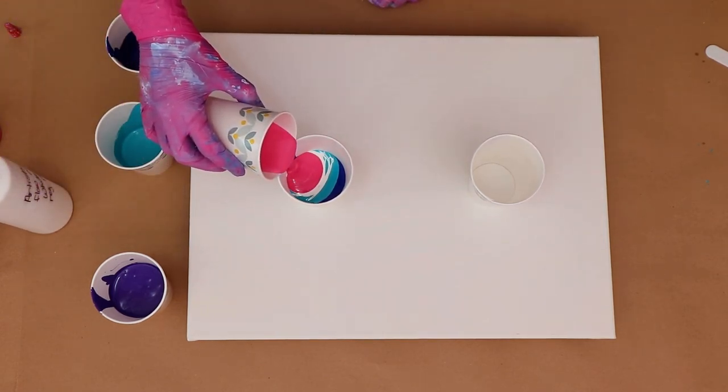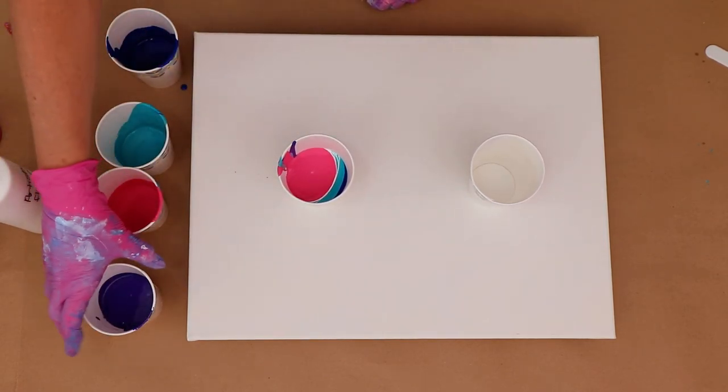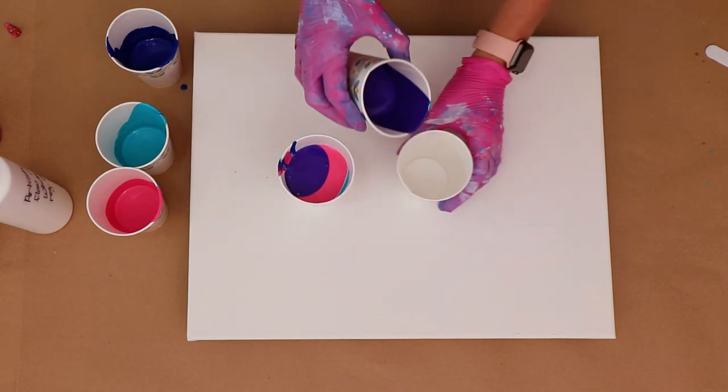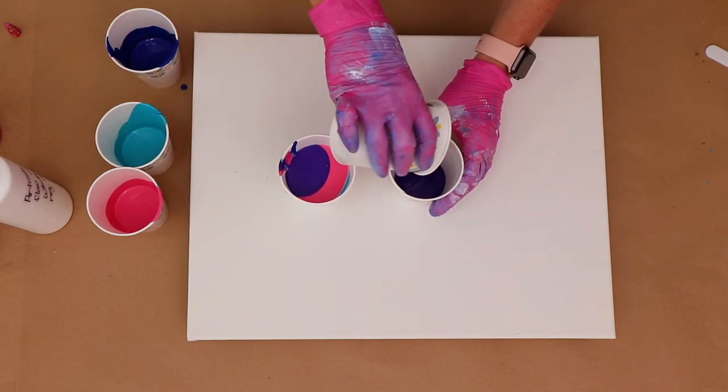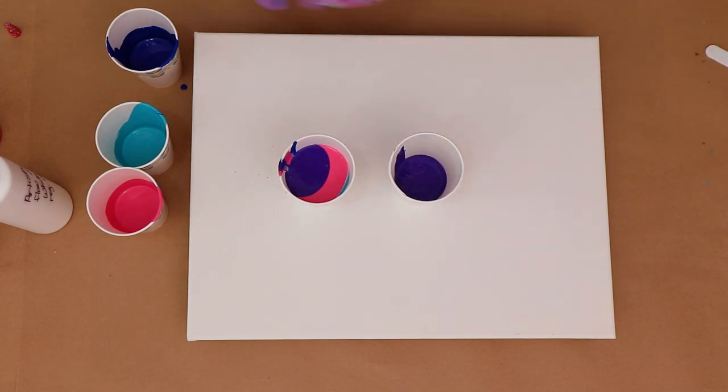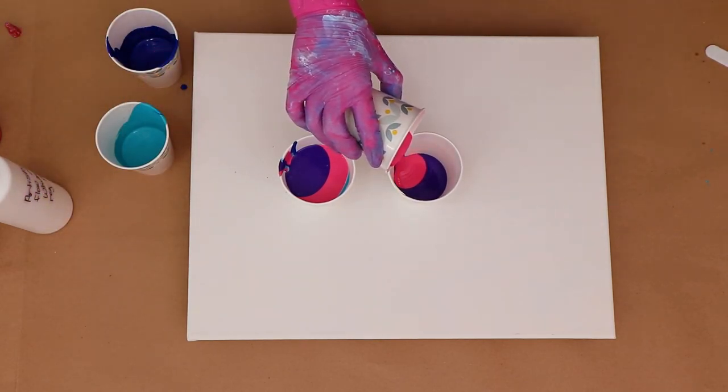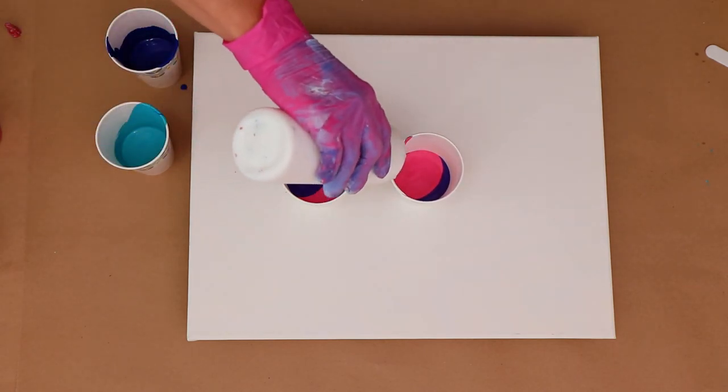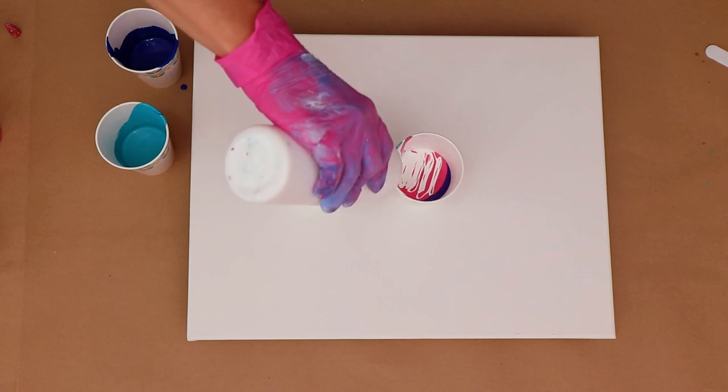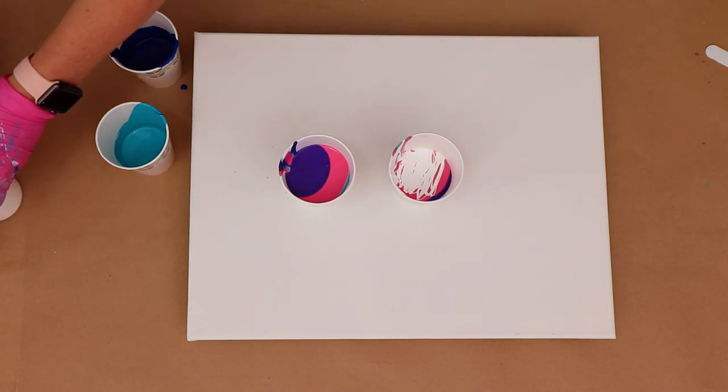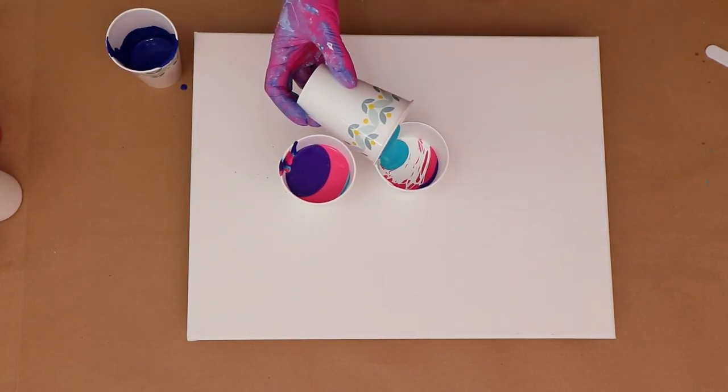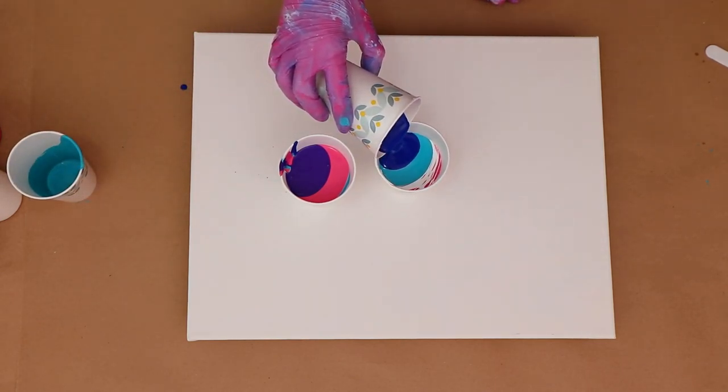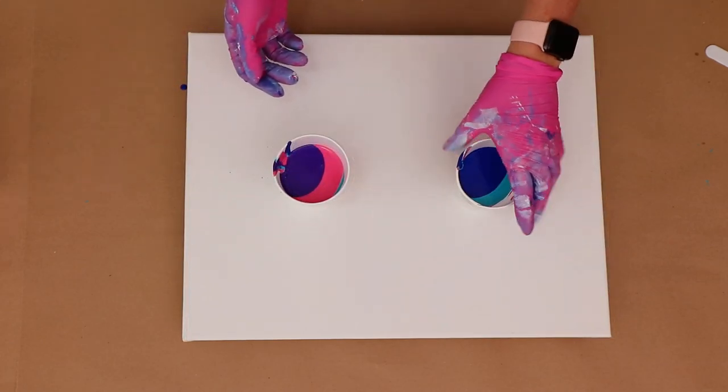And I did run out of the regular ready to pour white. So the white that I am adding is from Artist Loft. It is flow acrylic white. And I didn't add any silicone to the white, only because I was just gonna get a little bit from my squeeze bottle that I keep it in. And I didn't want to add silicone to the whole squeeze bottle there. And I just didn't feel like wasting another cup. So, that is the reason for that.